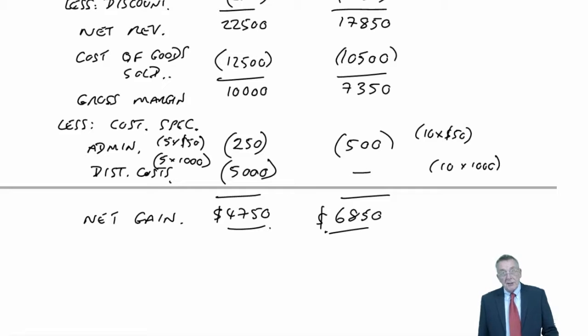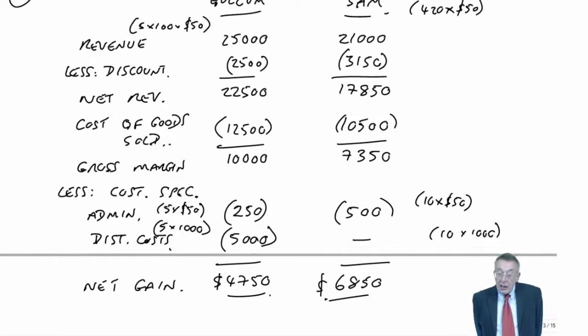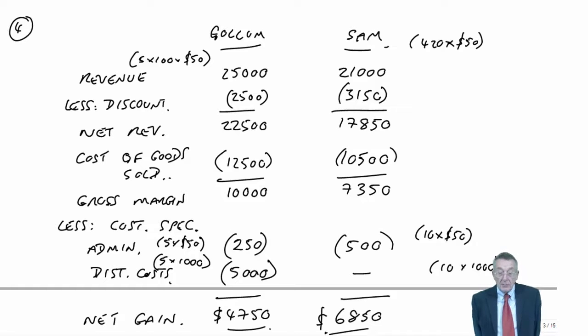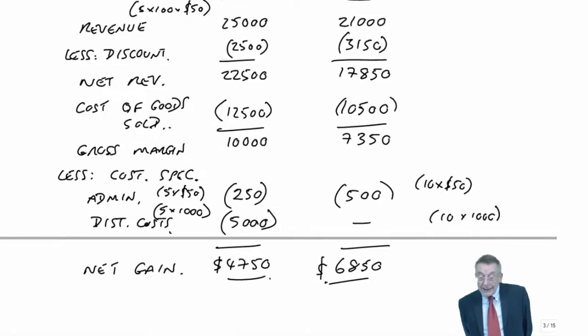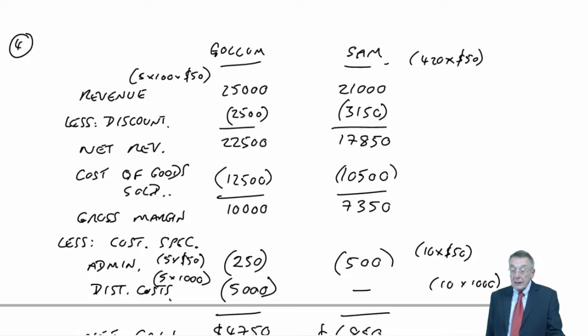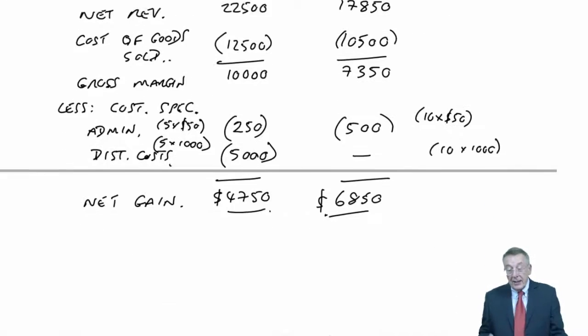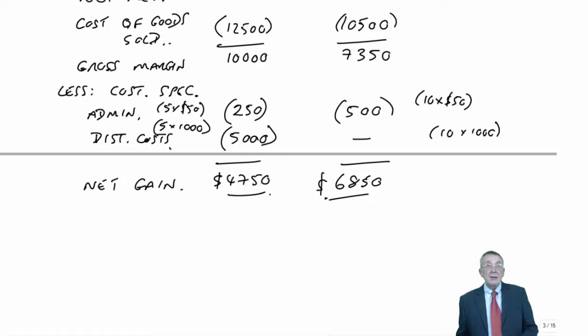Again, bringing in these customer-specific costs, earlier the gross margin, which is what traditionally we might only look at, Gollum is our best customer of the two. We've got more revenue, a bigger gross margin. But in fact, when we take into account the costs of dealing with the orders, the admin, the distribution, it turns out that Sam is better, and it's primarily because his discount is because of the collection of shoes, we don't have that $10,000 cost that we would otherwise have for distribution.